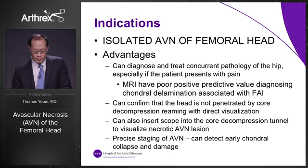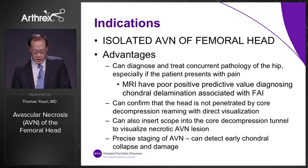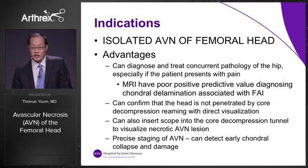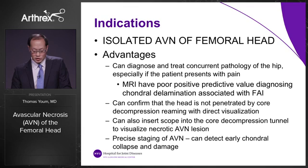The advantages of an arthroscopically assisted hip procedure is that you can diagnose and treat concurrent pathology of the hip, especially if patients present with pain. We know that MRIs have poor positive predictive value for diagnosing cartilage delamination associated with FAI. You can confirm that the head is not penetrated by core decompression reaming with direct visualization using the arthroscope, and you can also insert the scope into the core decompression tunnel to visualize the necrotic AVN lesion for precise staging.